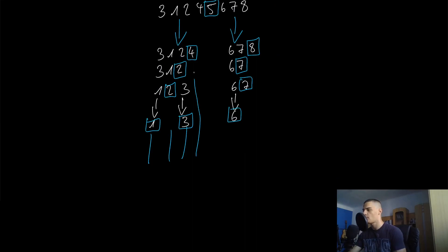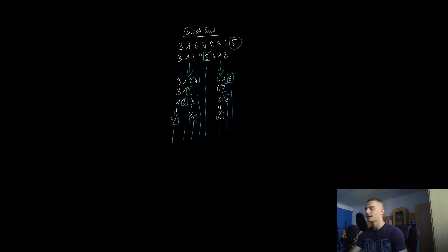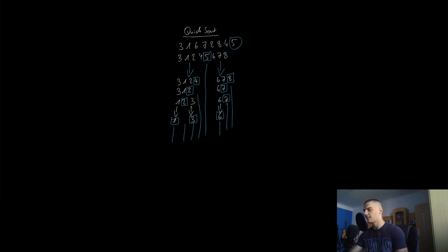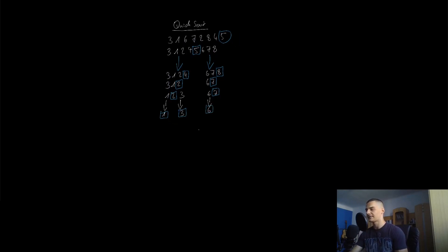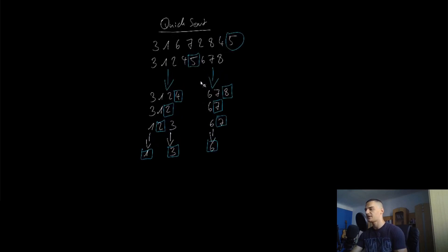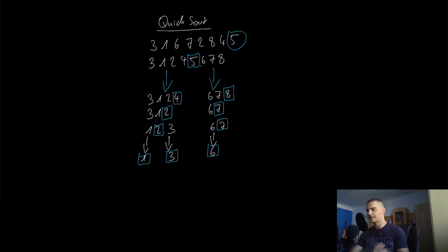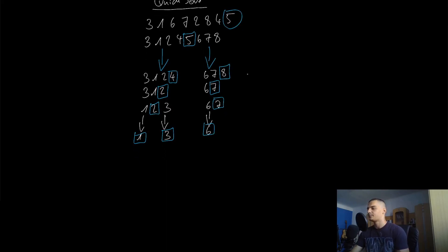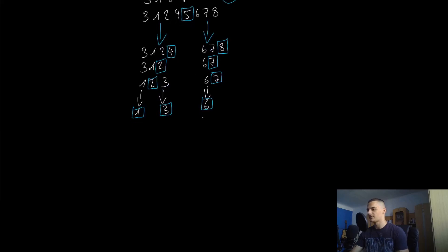Looking at the result, we now have the complete list sorted: 1, 2, 3, 4, 5, 6, 7, 8. This is already conquered — we don't have to merge it the same way we do in merge sort. We just split in the right manner and end up with a sorted list. Every time we use the pivot element to arrange elements relative to it, then split into two lists if necessary, and we end up with a sorted list.